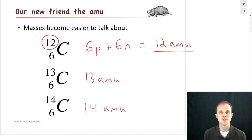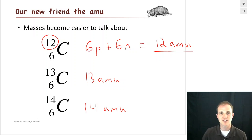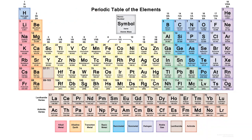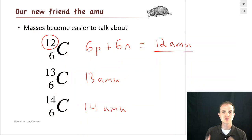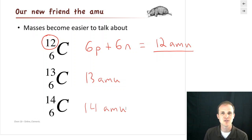Now, here's the thing. When you look at the periodic table and try to find the mass of carbon, you're not going to find anyone who tells you the mass of carbon is 12. If we look at carbon on the periodic table, there's the 6 on top that tells you there are 6 protons, and there's a number down below: 12.011. That 12.011 is telling us about the mass of carbon. But you just showed me that the mass of carbon is either 12, or 13, or 14 — how can it be 12.011?